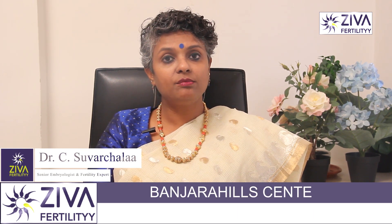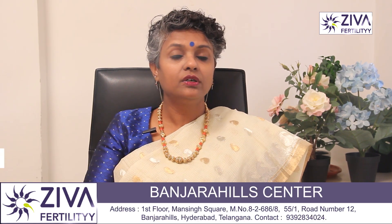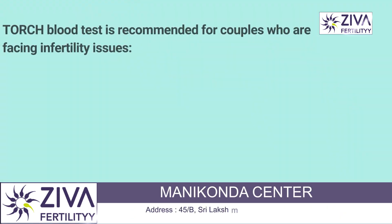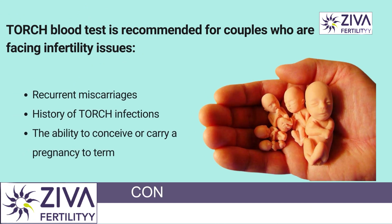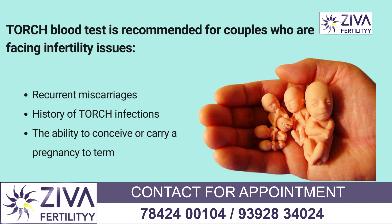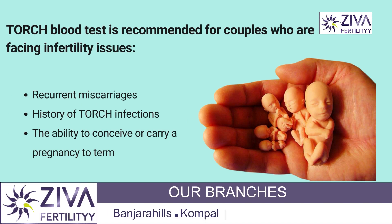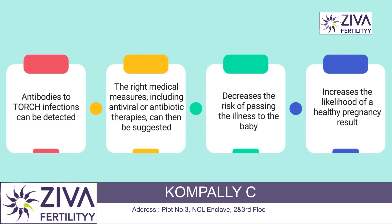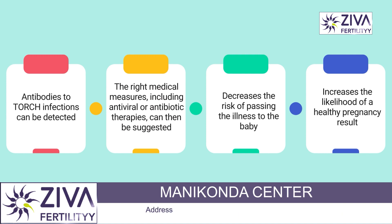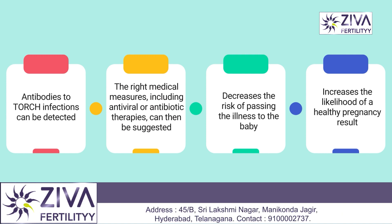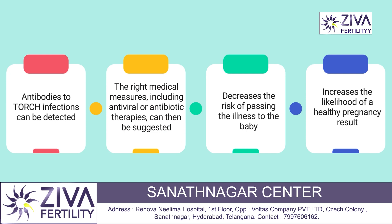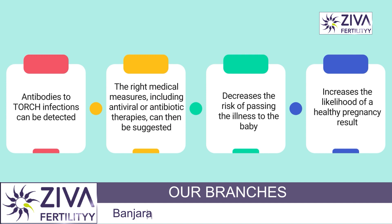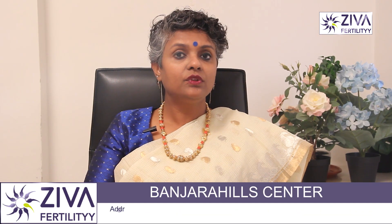In the context of infertility, the TORCH test may also be done as part of a regular workup for couples struggling with infertility, especially if there have been recurrent miscarriages or a history of TORCH infections. In some cases, these infections can affect fertility and the ability to conceive or carry a pregnancy to term. By identifying the presence of antibodies against TORCH infections, appropriate medical interventions such as antiviral or antibiotic treatment may be recommended to reduce the risk of transmitting the infection to the fetus or to improve the chance of a successful pregnancy outcome.